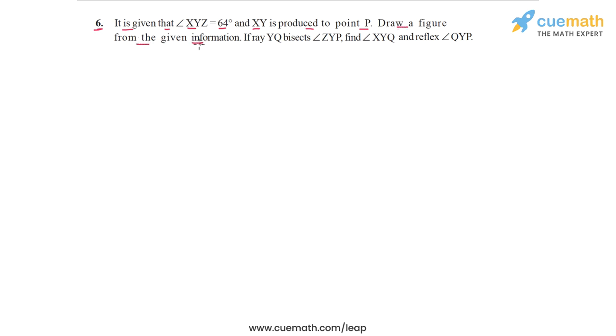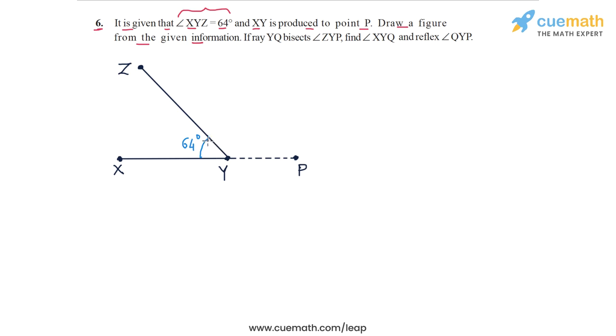Question 6: It is given that angle XYZ is equal to 64 degrees and XY is produced to point P. Draw a figure from the given information. So let's draw a figure where angle XYZ equals 64 degrees. I've drawn this figure — angle XYZ is 64 degrees, and XY is produced to point P. Ray YQ bisects angle ZYP, so here I have drawn ray YQ that bisects angle ZYP.